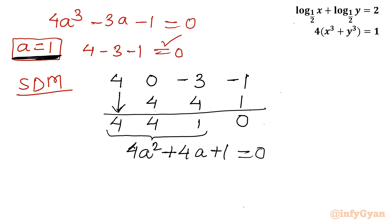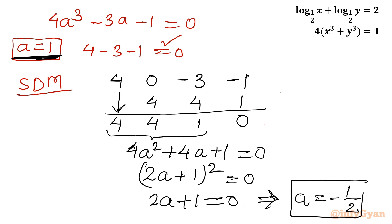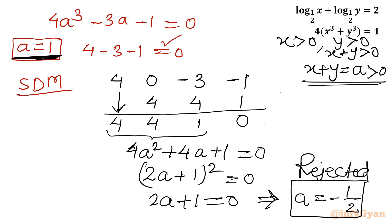We can see this is a perfect square: it equals 2a plus 1 whole square equal to 0. Checking: 2a squared is 4a square, 1 squared is 1, and 2 times 2a times 1 gives 4a — confirmed. So 2a plus 1 equal to 0 gives a equal to negative one half. However, a cannot be negative one half because a represents x plus y, and since x and y are positive, x plus y must always be positive. So we reject this solution as it would generate complex solutions. Only a equal to 1 is accepted.